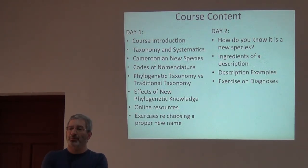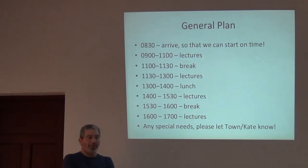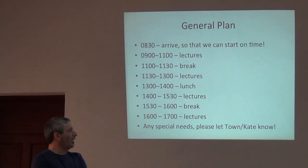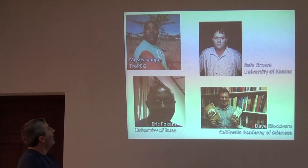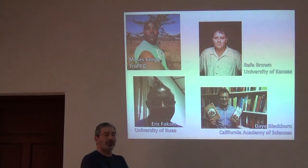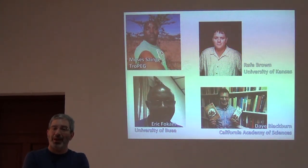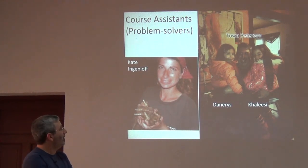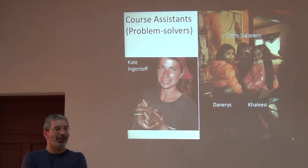The last course we did was on national biodiversity diagnoses, but in a very different sense of the word. You know the general plan: we'll essentially meet 9 to 11, 11:30 to 1, 2 to 3:30, and 4 to 5. Your instructors are Moses Sange from TROPEG, Rafe Brown from the University of Kansas, Dave Blackburn from Cal Academy of Sciences, Eric Focum from the University of Boya, and we'll have a guest lecture by Dr. Peggy from an agency that manages natural resources here in Cameroon. And as always, your problem solvers are Kate and me — and as always, those are my granddaughters. It's probably about time to get a new picture because now they're even bigger. I'll have a new picture by the next course. Thank you.